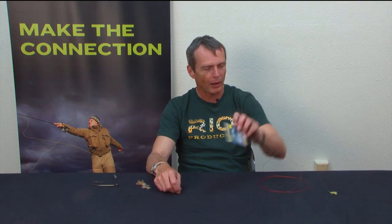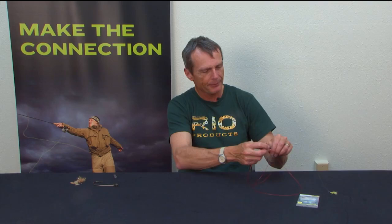So let's show you how this knot works. I'm going to show you in this thick red stuff because it's visible and easy to see, and tie it on this giant meat hook, again just for clarity and visibility.